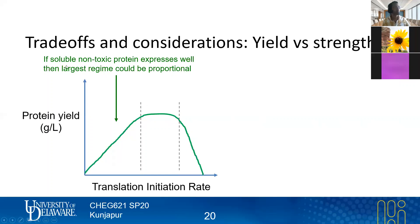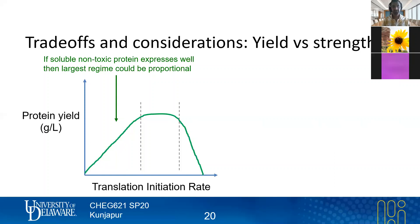The reason is that if your protein is soluble, not very toxic, and expresses well, then as you increase expression strength — with this focus on translation initiation and a stronger RBS — you'd expect to see more overall protein yield. Remember, these proteins are being made by a cell that's shifting resources towards overexpression of your protein.